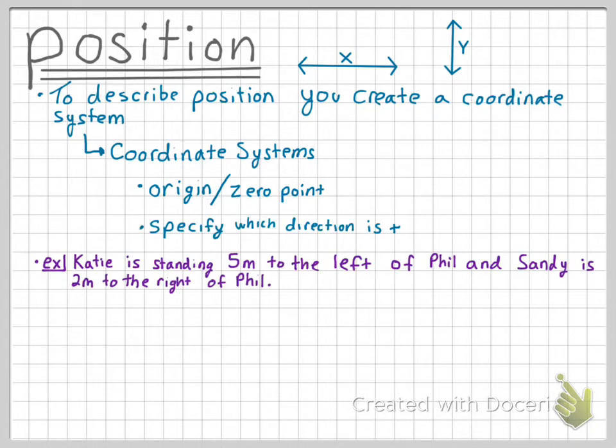Let's complete an example to further explain this idea. Katie is standing 5 meters to the left of Phil, and Sandy is 2 meters to the right of Phil. Since these three people are only positioned in one dimension, we only have to draw one axis, the x-axis.